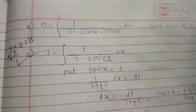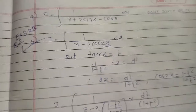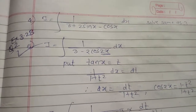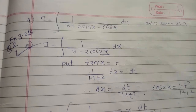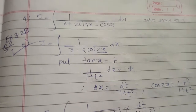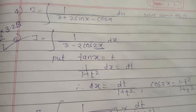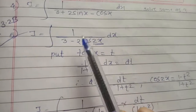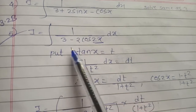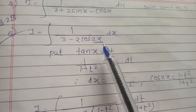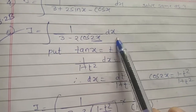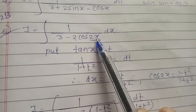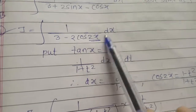Hello students. I am going to continue with the chapter Integration of 12th standard, Exercise 3.2b, Question number 2, Example number 5. The example is: I equals integration of 1 upon (3 minus 2 cos 2x) dx. This is an example of the 2x type.